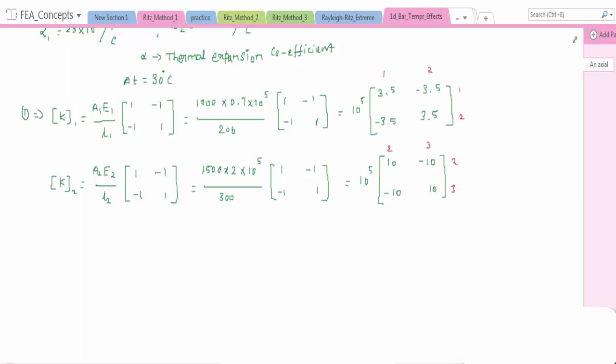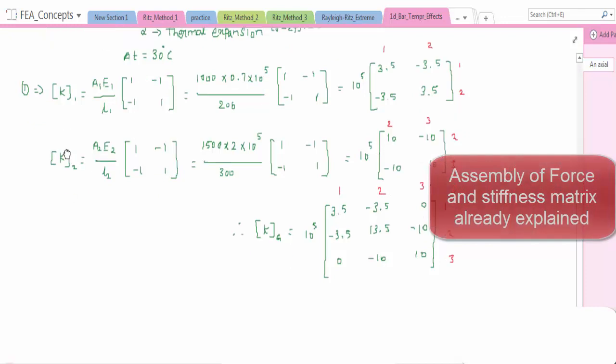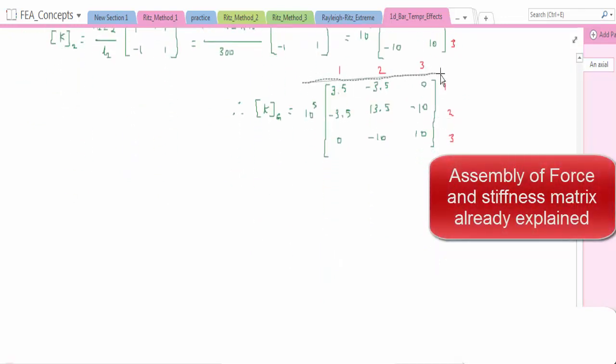1, 2, 2, 3. We have to assemble this as global stiffness matrix 10^5 [3.5 -3.5 0; -3.5 13.5 -10; 0 -10 10] for nodes 1, 2, 3. This is already explained, check my playlist so that you will get an idea of assembling of stiffness matrix.